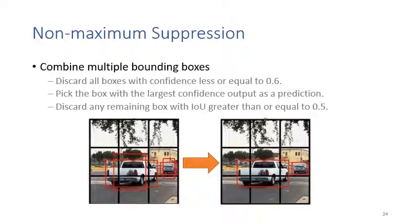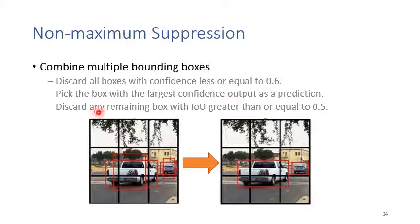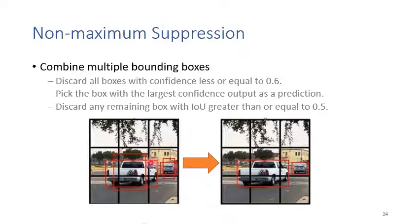Once we have predictions of all bounding boxes, we need to combine the overlapping ones. Rules: first, discard all bounding boxes with confidence ≤ 0.6. Then pick the bounding box with the largest confidence as the prediction. Discard any remaining box with IOU ≥ 0.5. In this example, the horizontal bounding box has higher confidence score, so we keep it. The vertical bounding box has IOU greater than 0.5, so we remove it. This method is called non-maxima suppression.